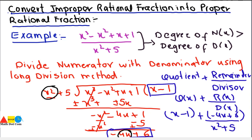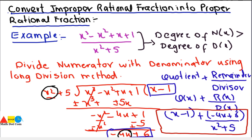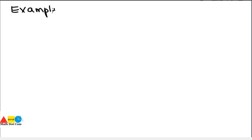So the result is x - 1 + (-4x + 6) / (x² + 5). This is now in proper rational fraction form. We have converted the improper rational fraction into a proper rational fraction using the long division method, since the power of x in the denominator is now greater than the power of x in the numerator. Let's have one more example using the same method.